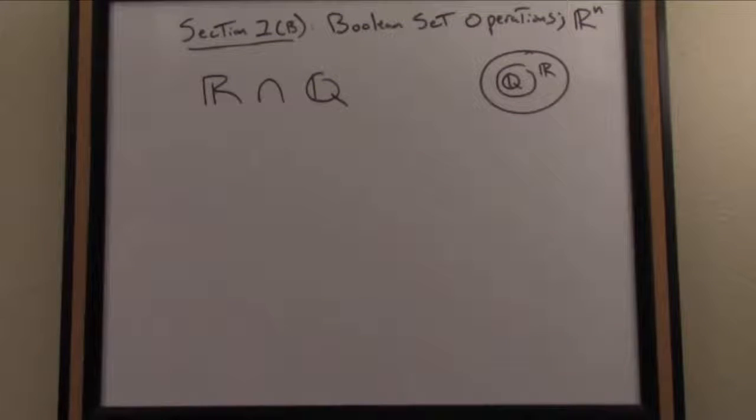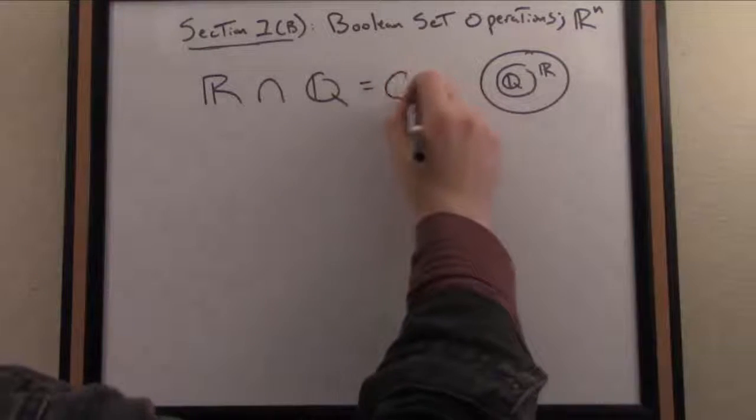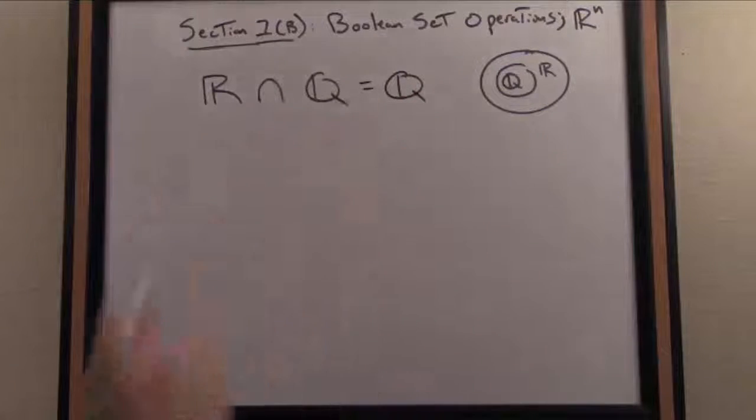To pose the question, what is the intersection of these two sets is to say, what is the set of all common elements in both the reals and the rationals? By our Venn diagram design, we can see that the rationals are contained entirely inside the reals. So there is the common set of numbers for the reals and the rationals intersected.